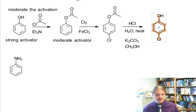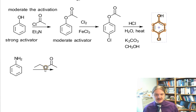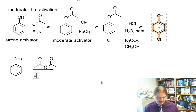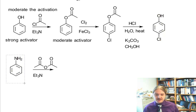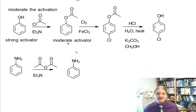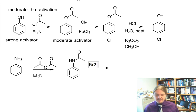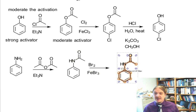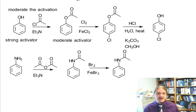This strategy also works on aniline. In this case, instead of acetyl chloride, the acylation reaction can occur with acetic anhydride and triethylamine to absorb any extra protons generated. We don't want this reaction to get too acidic because then you can start hydrolyzing the amide. The amide is now a moderate activator instead of a strong activator, so reactions occur at para, pretty much only at para, and you're not going to get a lot of overreaction.